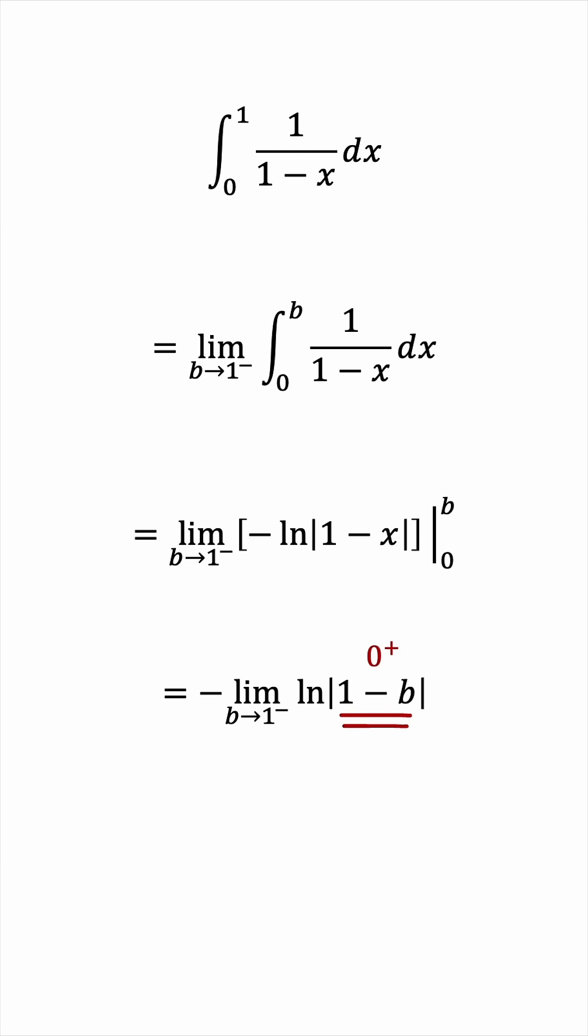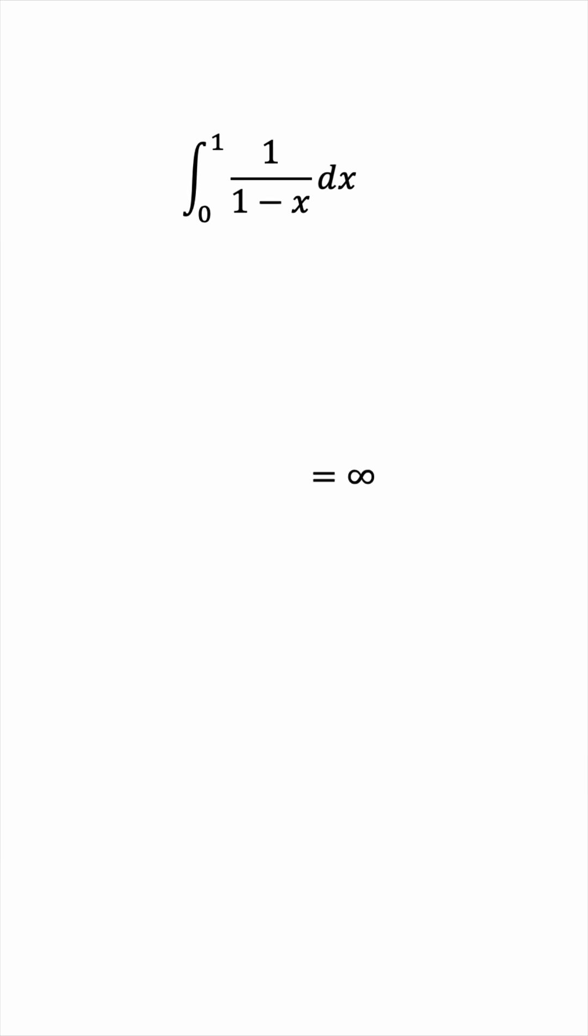And we know that the natural log tends to negative infinity as its input tends to 0 from above. But we have a negative sign outside as well, so this ends up being positive infinity. So, the improper integral we started with diverges to infinity.